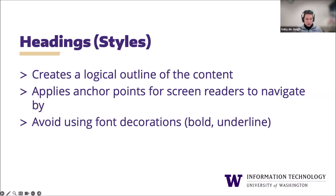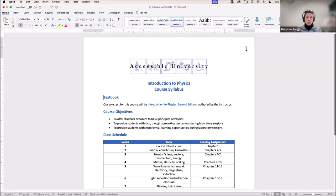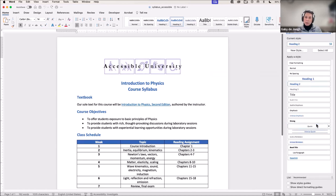Let's take a look at adding styles in Word. I have that same example syllabi for Introduction to Physics. We do have headings included in this document. To show those headings, there are a couple of different places where they're exposed. At the top, we've got different styles that appear. To the right of that, I have a little tool — when I hover my mouse over it, the tooltip says 'Styles Pane.' When I select that, a styles pane pops out on the right-hand side. I'm working on a Mac, but these steps also work in Word for Windows.